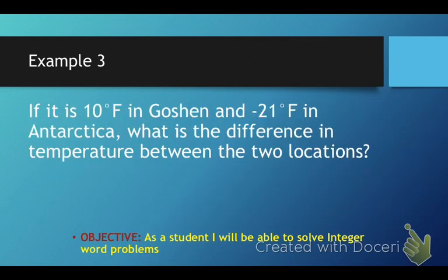All right, example number 3. It is 10 degrees Fahrenheit in Goshen, and negative 21 in Antarctica. What is the difference in temperature between the two locations? Now, this is where things get a little tricky, because this says difference.